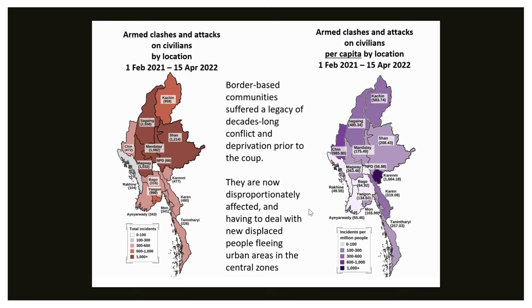This per capita analysis helps understand the level of danger that residents are in. This data is up to April 2022. We are about to make a new heat map showing the heat of attacks, and we already know that Chin, Sagaing, and Magwe are the worst areas, because in recent months attacks on those areas have been getting worse and worse.